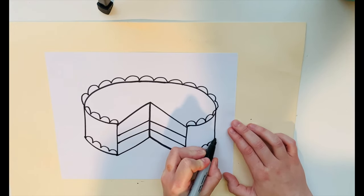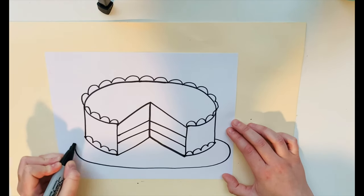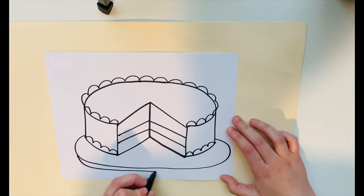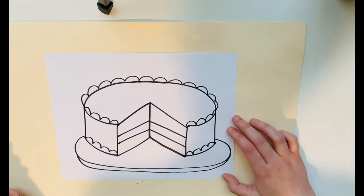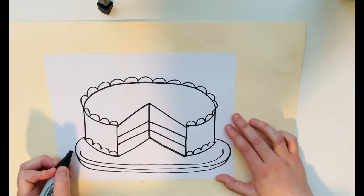Now this part is optional. I'm just drawing the plate or the cake pan that my cake is sitting on. You don't have to do this part. This is just a choice that I'm making. You're the artist of yours, so you get to make those choices if you want to.